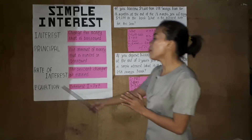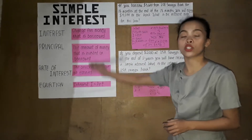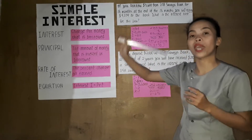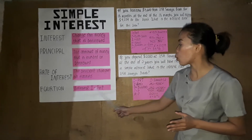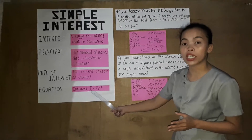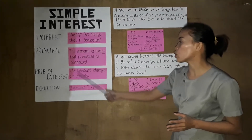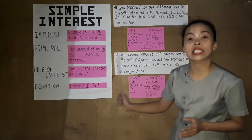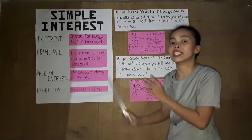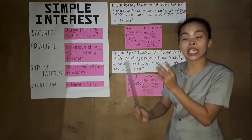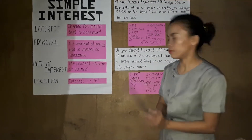How about the equation? We have the formula for finding simple interest: I equals PRT. I stands for interest, P is equal to principal, R is equal to rate, and T stands for time. Always remember that time is always expressed in years — so 12 months equals one year.